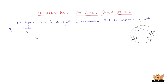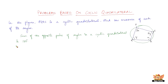In this video, let us solve problems based on cyclic quadrilateral. PQRS is a cyclic quadrilateral — find the measure of each of its angles. We've got four angles given: x, 5y, 3x, and y. One of the most important properties of the cyclic quadrilateral is that the sum of the opposite pairs of angles is 180 degrees.